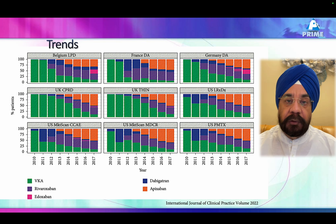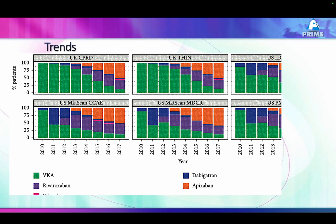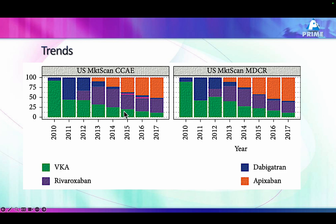Looking at the trend of antiplatelet and NOAC use over time: initially warfarin or VKA dominated, then dabigatran increased, but with introduction of rivaroxaban, dabigatran use reduced. With apixaban, the number of patients on it very quickly increased — it is becoming the choice NOAC in most categories, except where a patient wants once-daily dosing, which is rivaroxaban. The role of dabigatran is almost diminished worldwide.